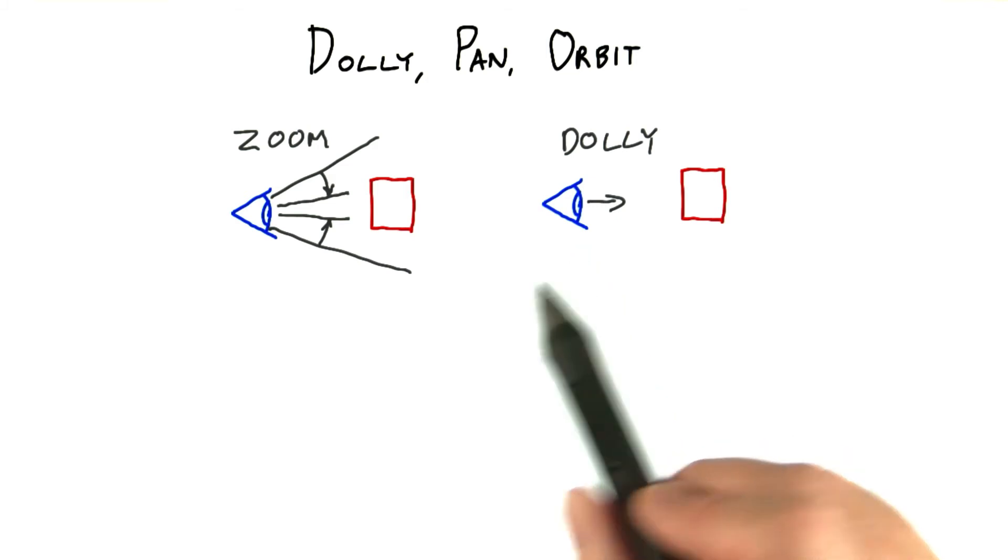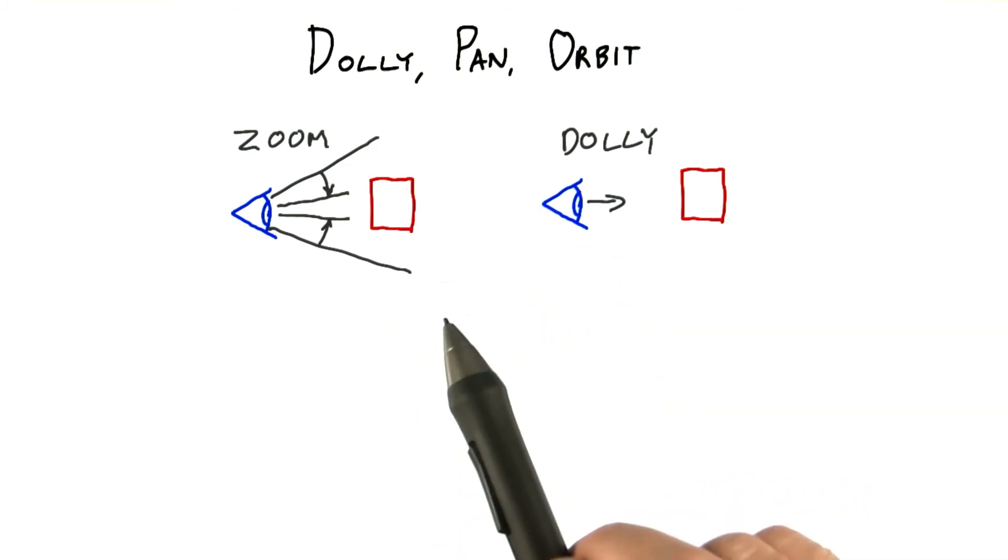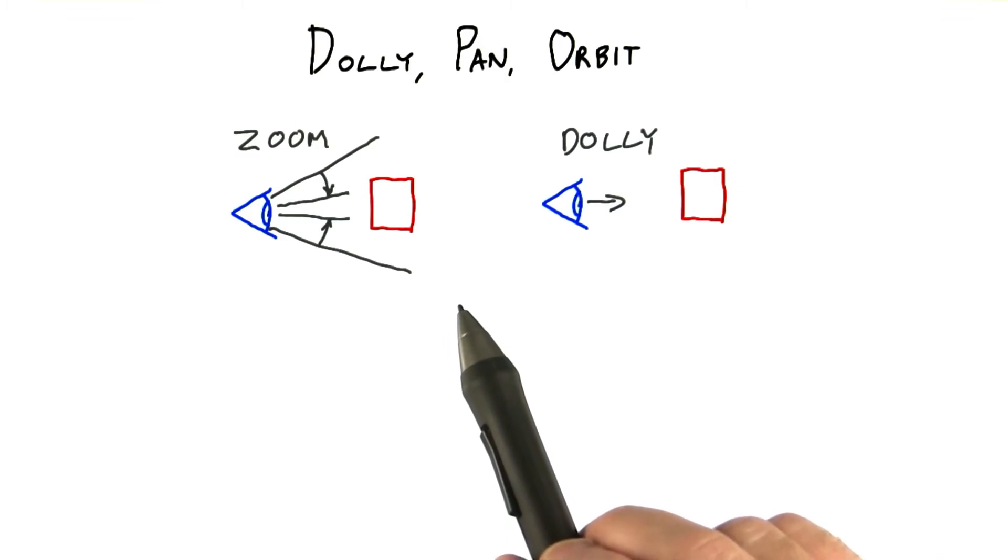It's so easy in computer graphics to either zoom in or dolly in that they're sometimes not that easy to tell apart. However, they're certainly different in their effect on the camera's field of view and location.